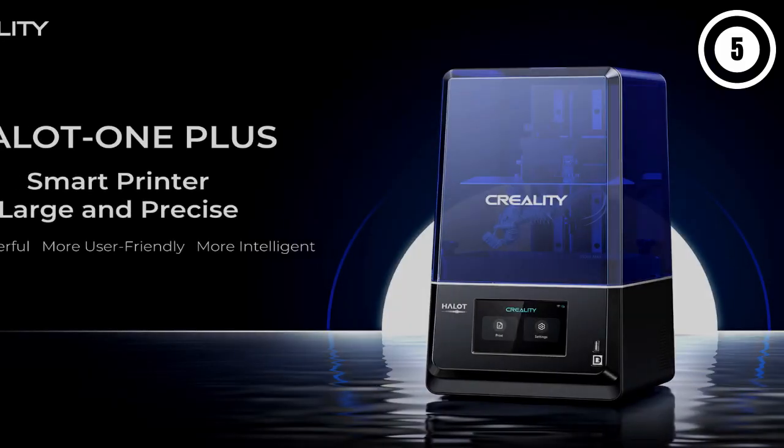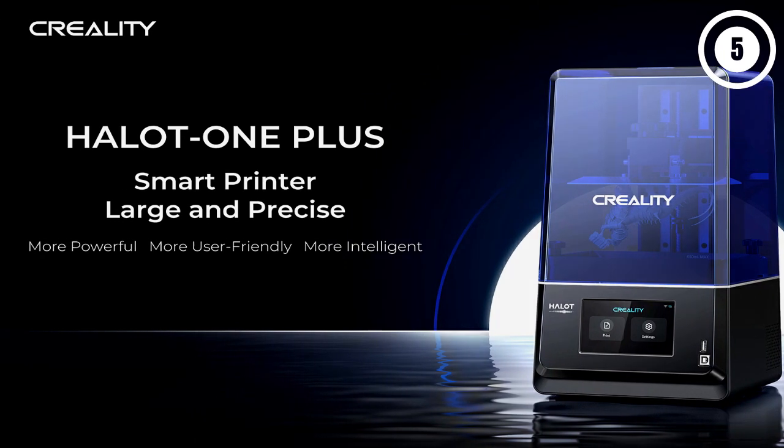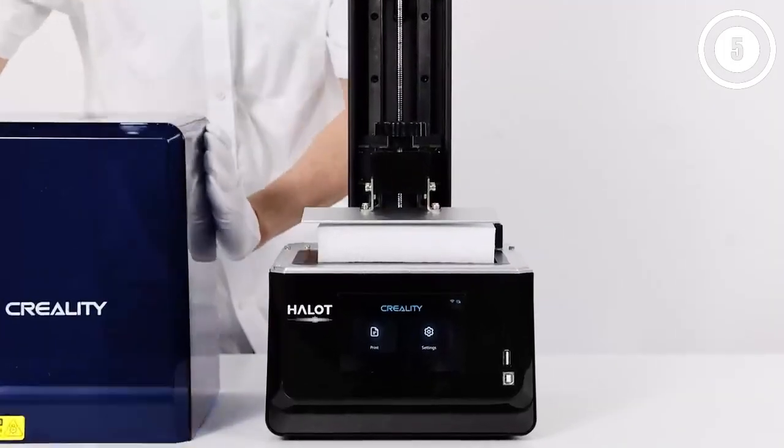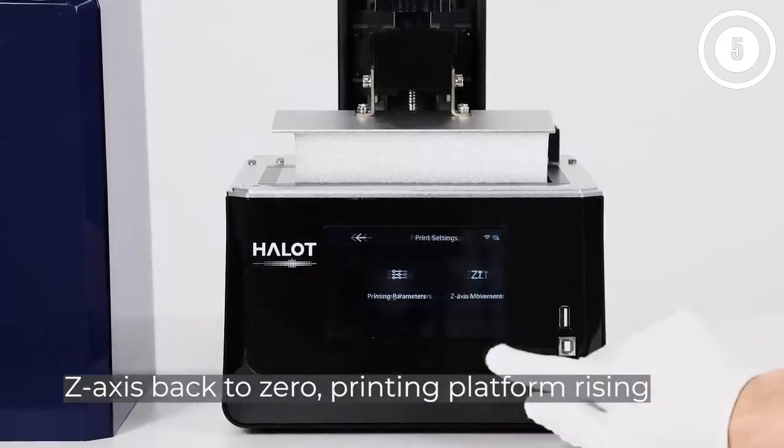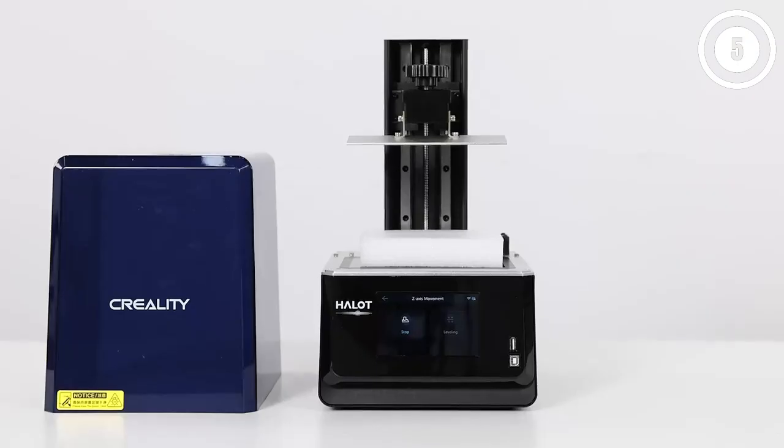Per layer cure times, 3 seconds per layer, and a solid dual linear rail Z-axis to allow for fast and accurate printing. The Halot One Plus also includes an integrated air filtration system which reduces the amount of odor when printing, a surprising addition not typically seen at this price point.